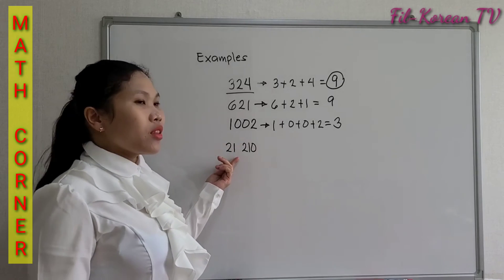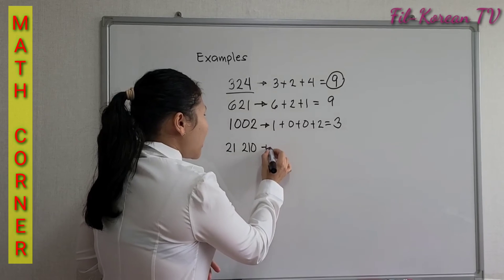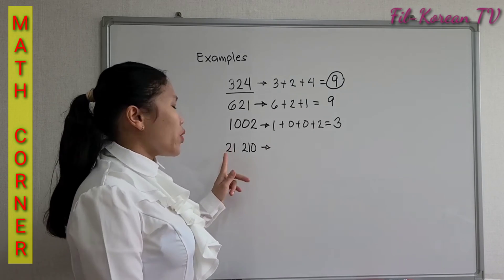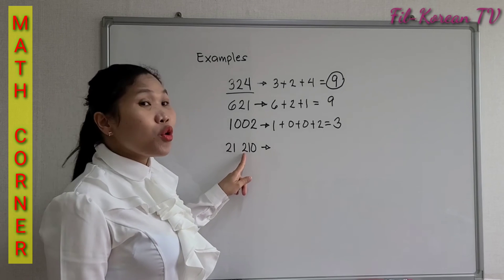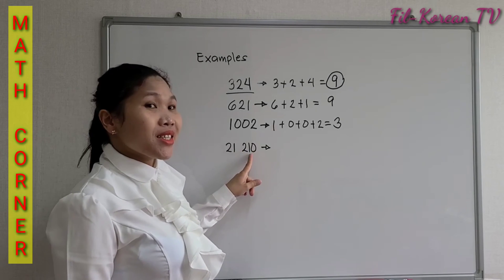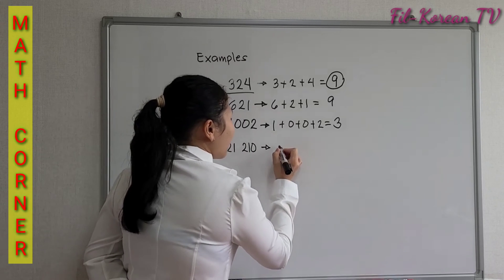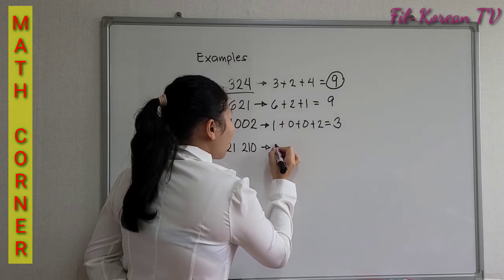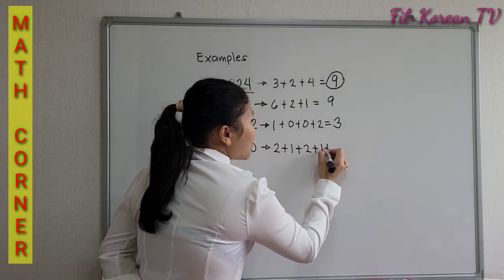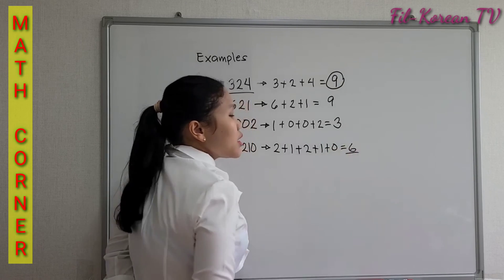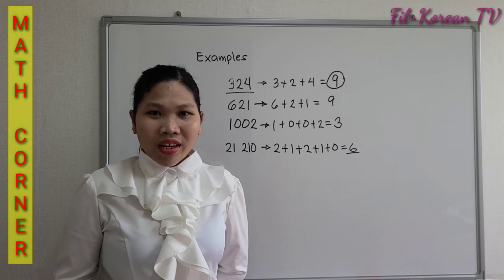21,210. There are 5 digits in this number, so we will add: 2 plus 1 plus 2 plus 1 plus 0. Adding mentally: 2 plus 1 is 3, plus 2 is 5, plus 1 is 6, plus 0 is 6. The answer is 6.